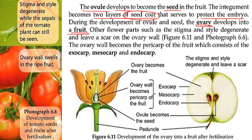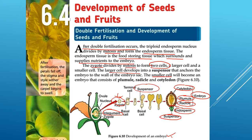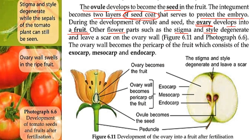During the development of the ovule and seed, the ovary will develop into the fruit. Remember: ovule develops into seed, ovary develops into fruit. The other parts of the flower such as the stigma and the style will degenerate and leave a scar on the ovary wall.